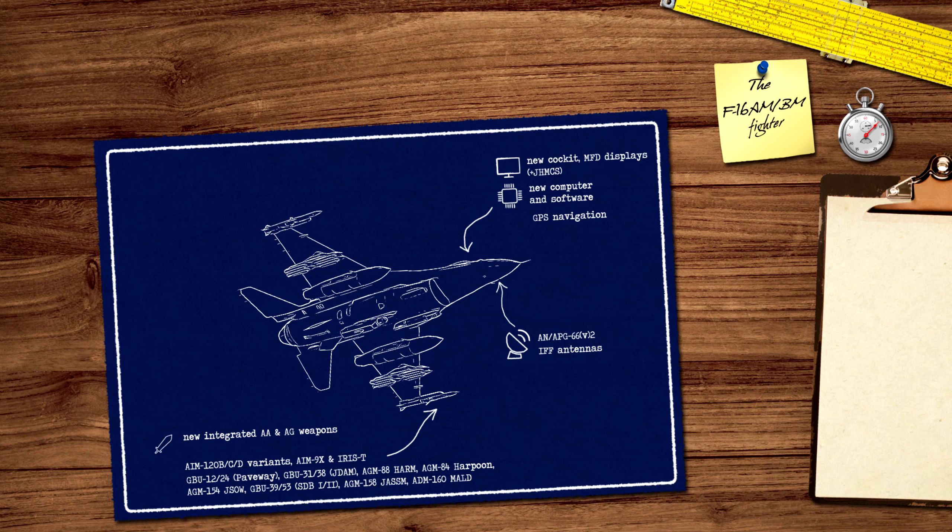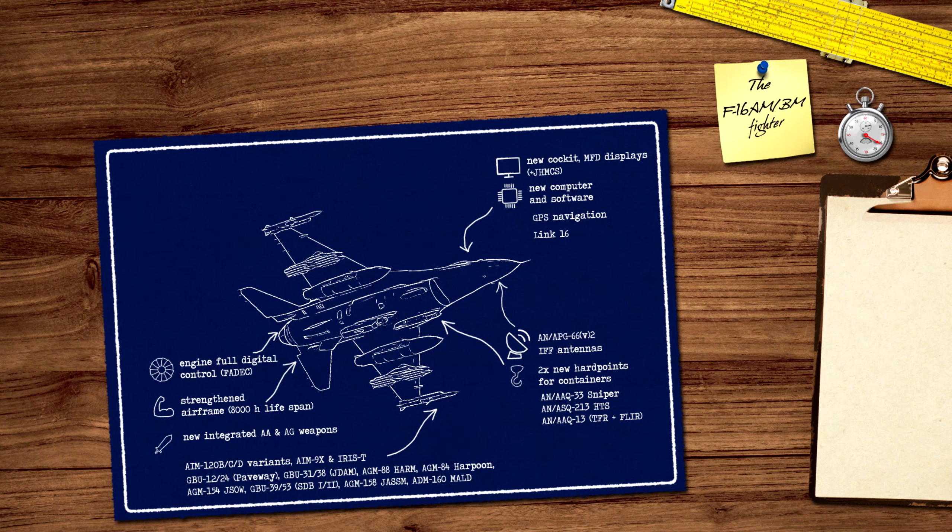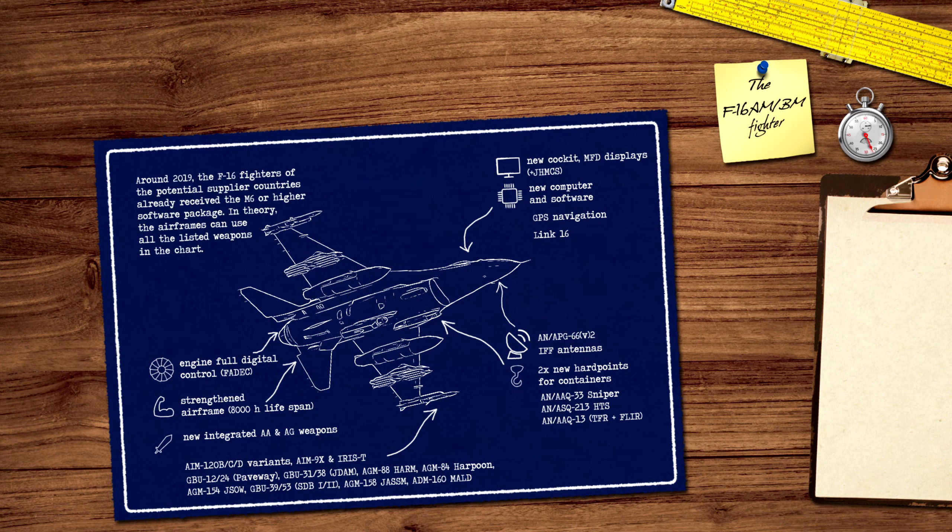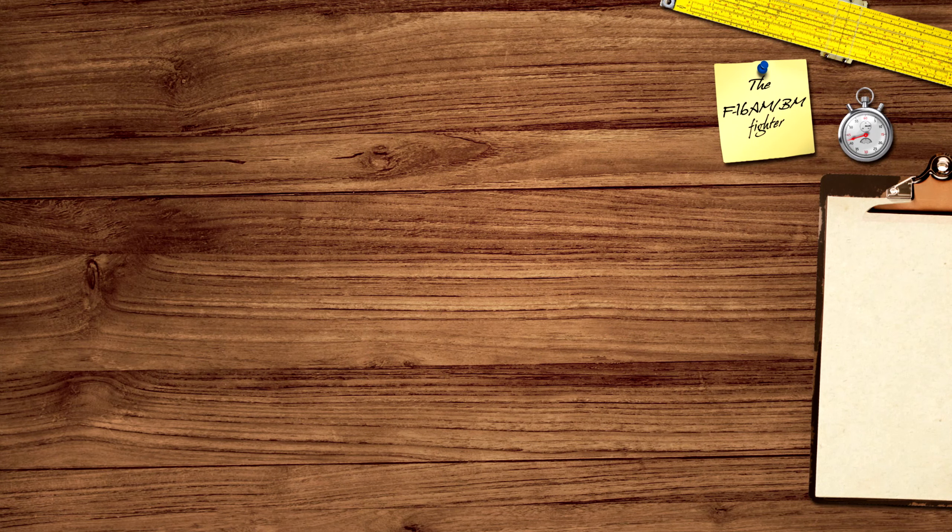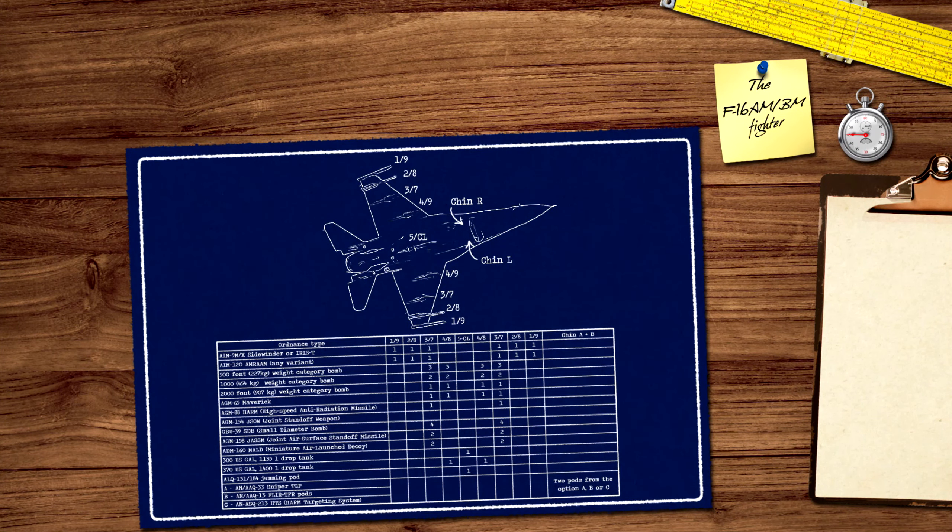Two new hardpoints were added under the engine intake. Integration of inter-flight data link with the Link-16 protocol. The airframe was strengthened. The lifespan of the airframe increased to about 8,000 hours. Based on the sources, the F-16 AM and BM airframes were at least at the M6 upgrade level already around 2019. Based on these, it can be stated that the fighter jets of Netherlands, Denmark, Belgium and Norway are capable of using almost all of the weapons and additional equipment listed in the chart. Potentially, only these countries can hand over F-16 fighter jets, or maybe Poland.